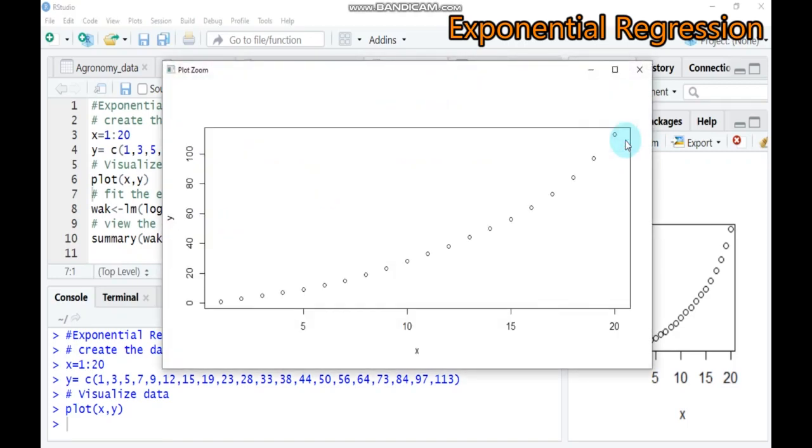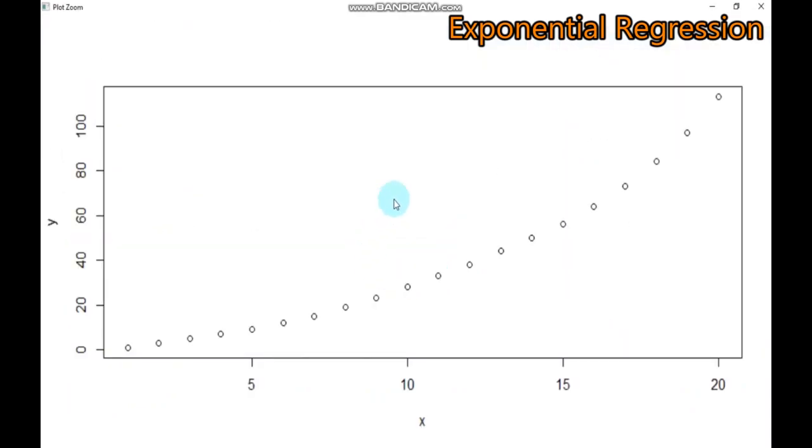From this plot we can see that there exists a clear exponential growth pattern between the two variables. It starts slowly and then grows rapidly. This seems like a good idea to fit an exponential regression equation to describe the relationship between the variables.